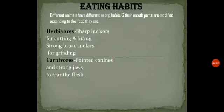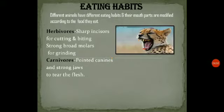Next we will talk about carnivores. Carnivores have pointed canines — sharp canines. And they have strong jaws to tear the flesh. They kill the prey and eat the flesh. So to tear the flesh, they have sharp pointed canines.